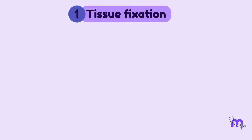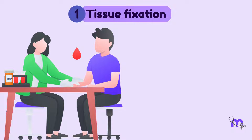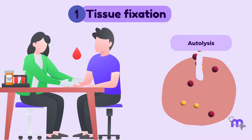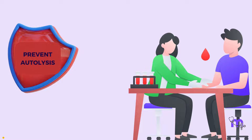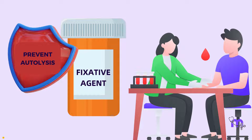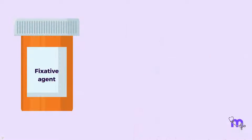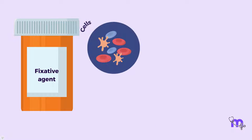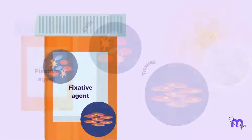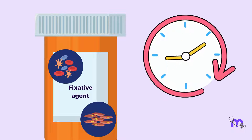The first step is the fixation of the tissue. Immediately after the tissue is collected, the next natural step is autolysis, where the cell begins to self-destruct. To prevent this, the tissue has to be treated with a chemical called a fixing agent or fixative, like formalin. It also helps in preserving cells and tissues for longer periods. The tissues are stored in the fixative for a few hours.